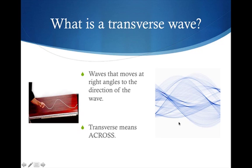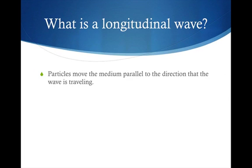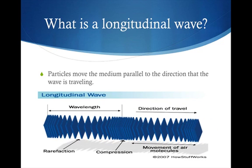A longitudinal wave has particles that move the medium parallel to the direction that the wave is traveling. In this picture, a longitudinal wave shows rarefaction and compression. Rarefaction is when the wave particles are moved far apart from each other, and compression is where they're pressed really close together. A wavelength in this case is the distance from one compression to the next compression, or one rarefaction to the next rarefaction. The wave is moving this way, and the compressions and rarefactions are moving that way as well.